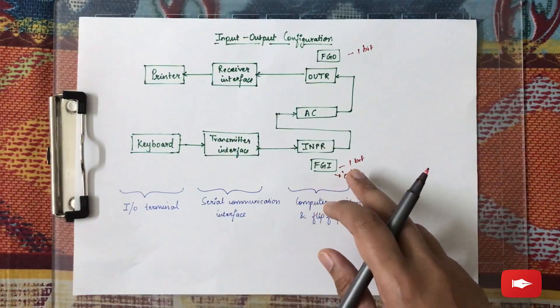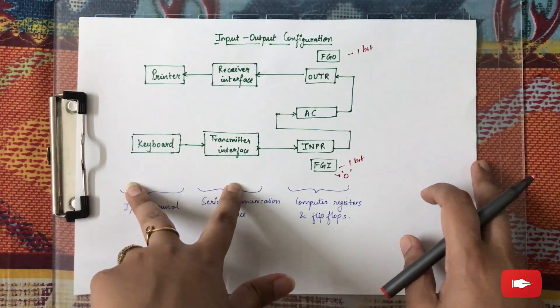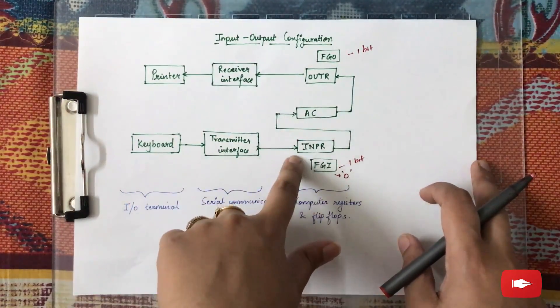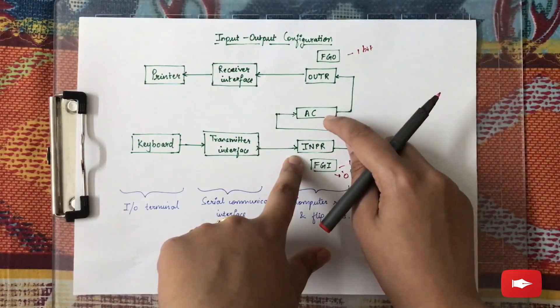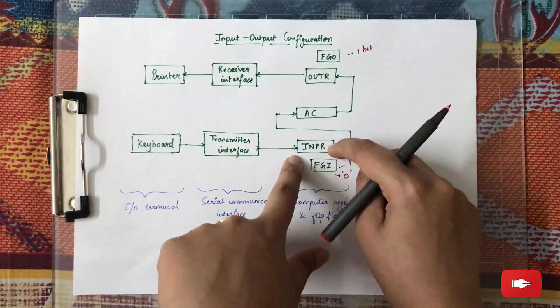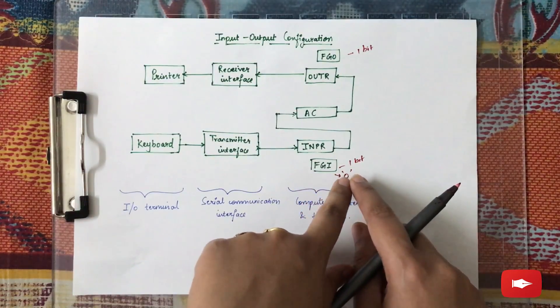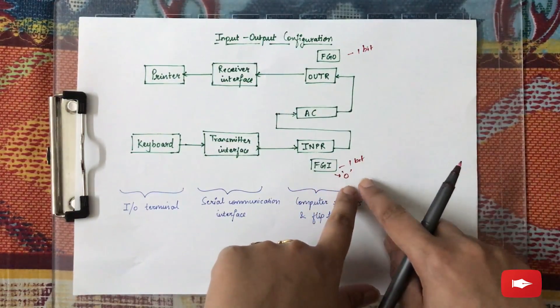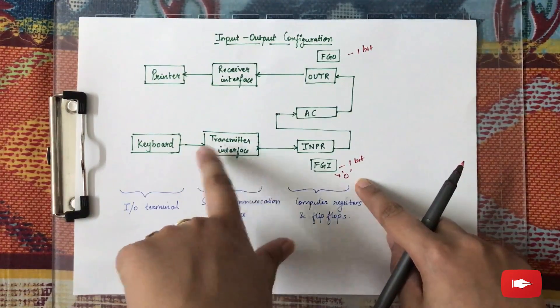Because the value of FGI is set to 1, no other information can be sent from the input devices into INPR. Then the information goes through the accumulator, and as soon as it goes from the input register to the accumulator, the value of FGI is again set to 0. That means another piece of information from the keyboard can enter into the input register.